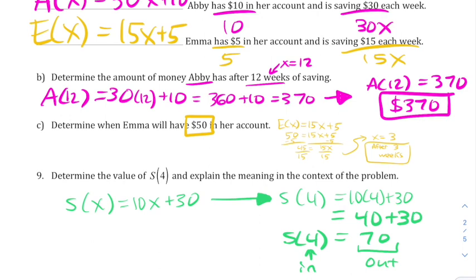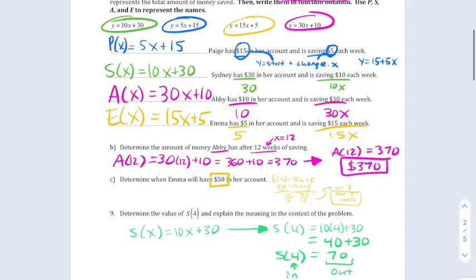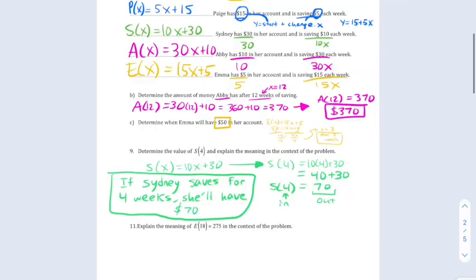which means that our input is 4 and our output is 70. Putting this back into the context of the original problem, this says if she saves for 4 weeks, she'll have $70. Notice that I specifically talked about Sydney as this is Sydney's function. If you just said she saves, it could have been one of the other girls.